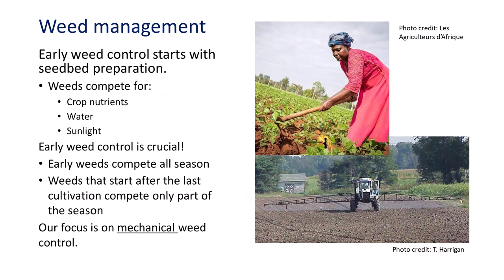Weed control starts with seedbed preparation. Weeds compete for crop nutrients, but you cannot simply apply extra fertilizer to offset the damage from weeds because the weeds will also benefit. In dry years, competition for water will reduce maize yields. Weeds also compete for sunlight.